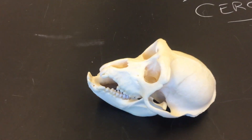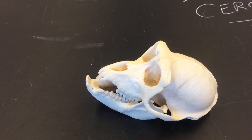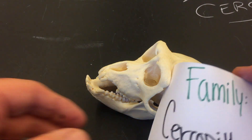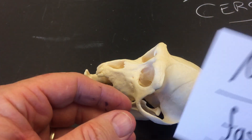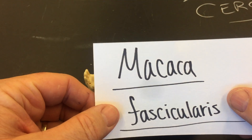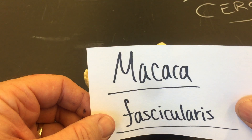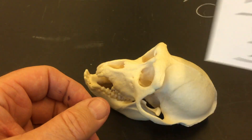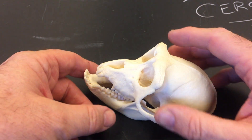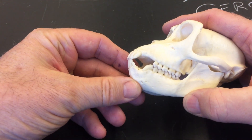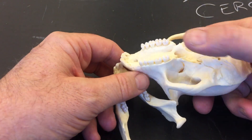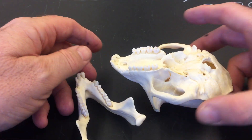Not all primates are arboreal. Baboons are a good example of that, as are some of the apes we'll be dealing with shortly. In the Cercopithecidae, we have this representative macaque skull — Macaca fascicularis, a crab-eating macaque. Looking at the teeth, you'll see that it is fairly capable of an omnivorous diet.